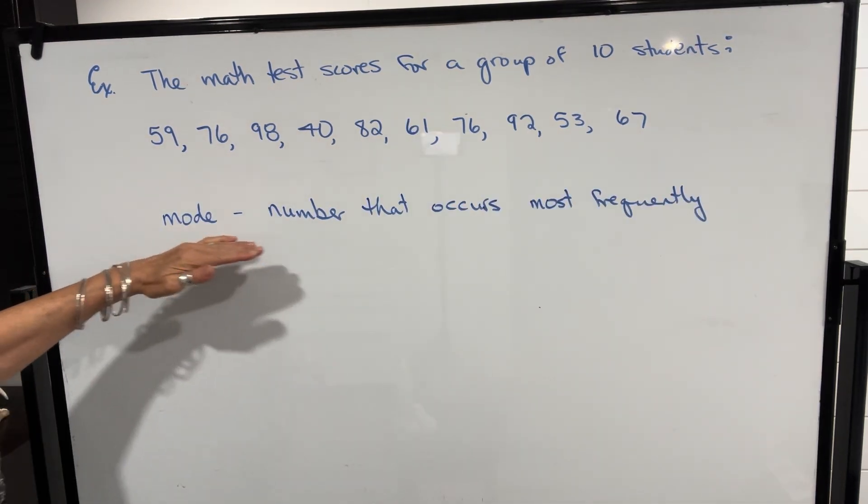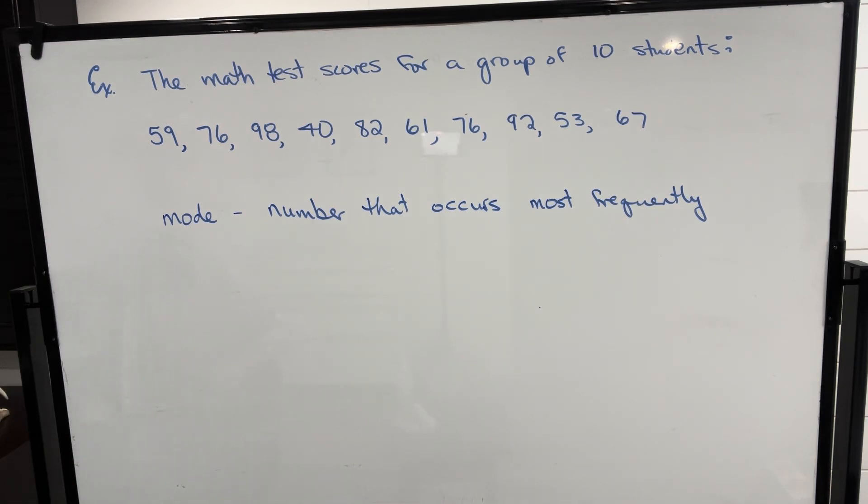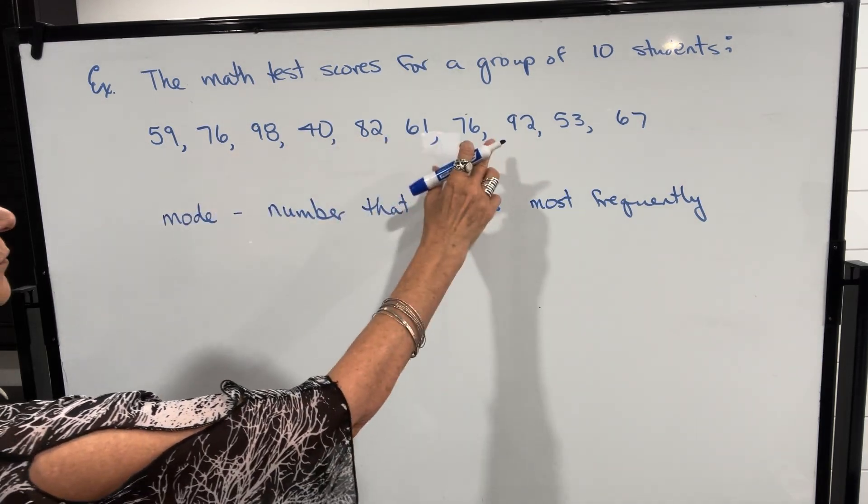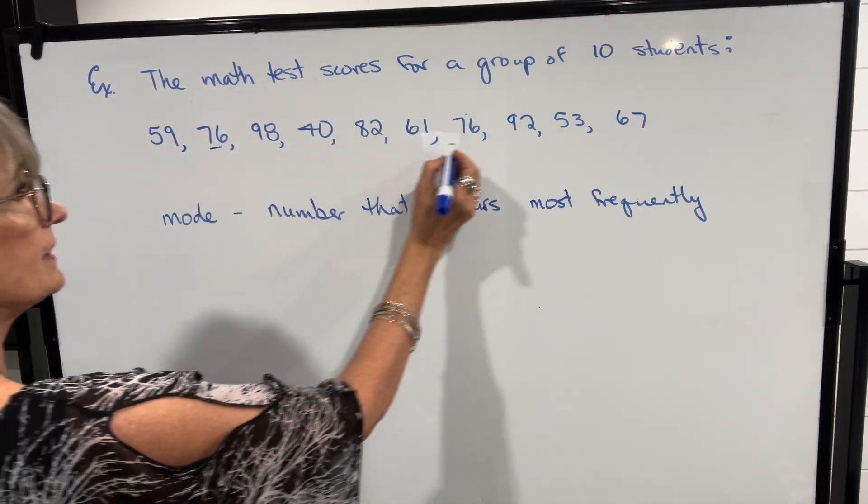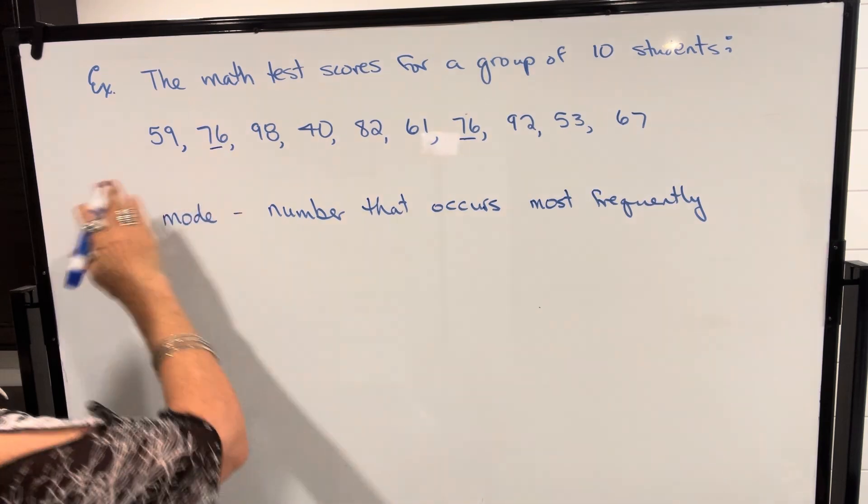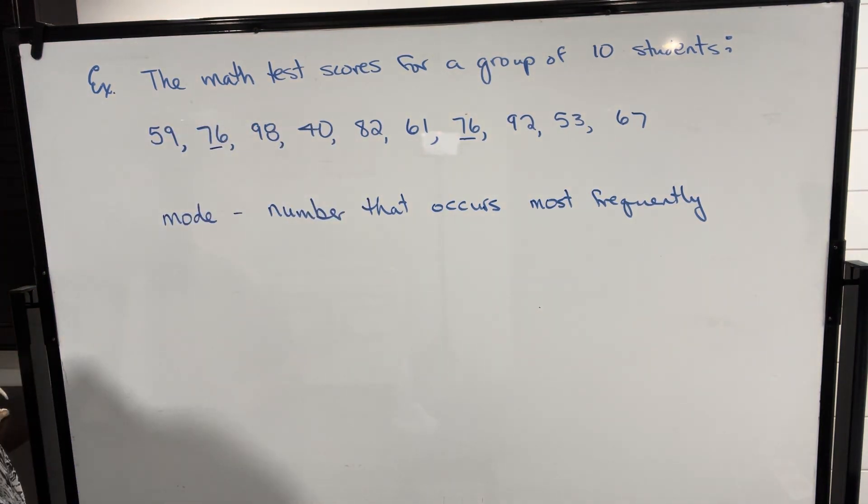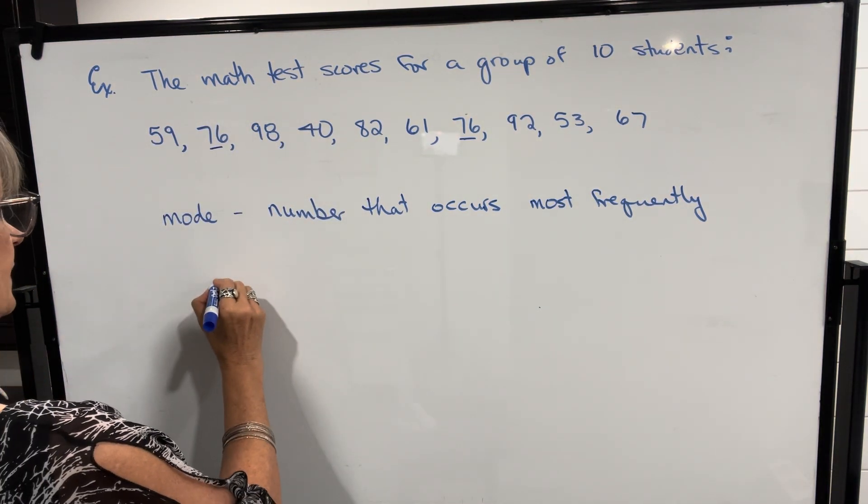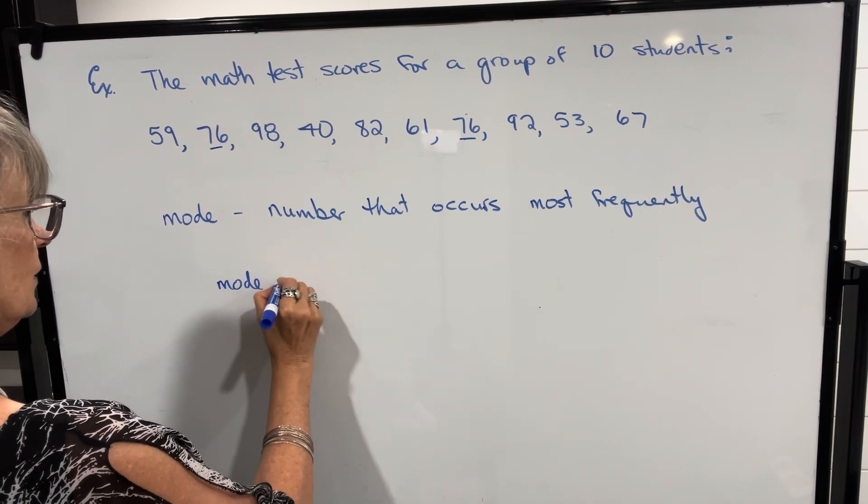Lastly, we have mode and that refers to the number that occurs most frequently. You may not have a mode or you may have more than one. In this case, when we look at these scores, we can see that 76 occurred twice and all the other scores only occurred once. So the mode in this case would be 76.